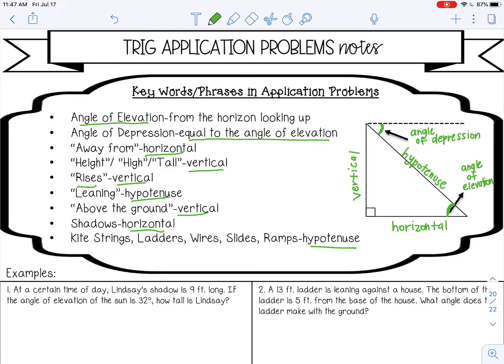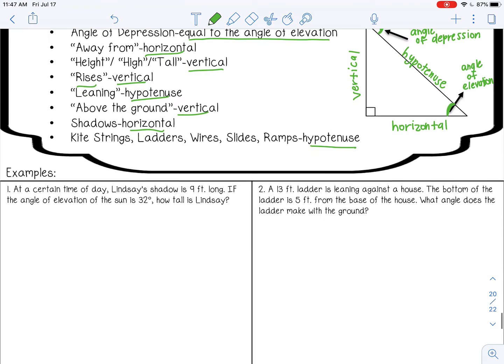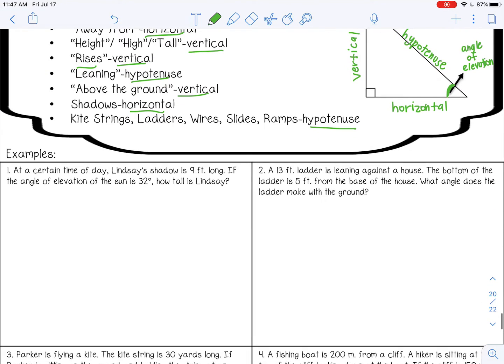So let's try some examples. When I draw my triangle for an application problem, I always draw it like this every single time. Now, it may not match as far as the lengths of the sides, but that's okay. So this is my right angle. So it says at a certain time of day, Lindsay's shadow is nine feet long. So shadows are always horizontal. So on the bottom. If the angle of elevation of the sun is 32 degrees, how tall is Lindsay?